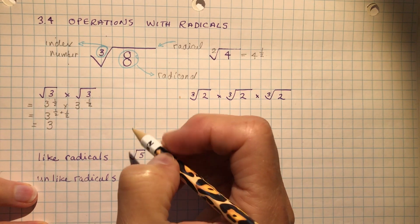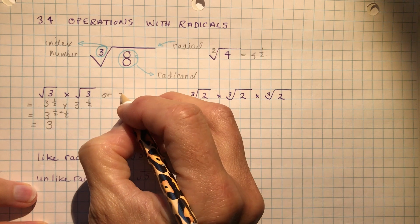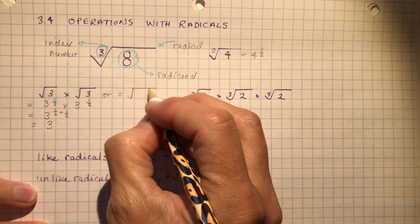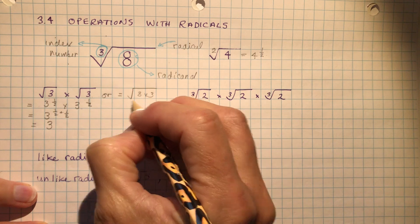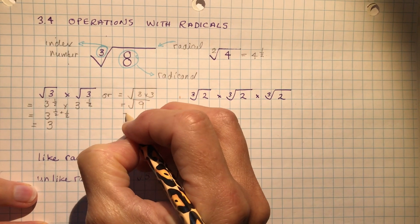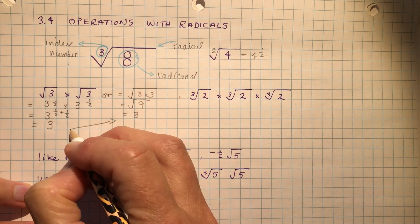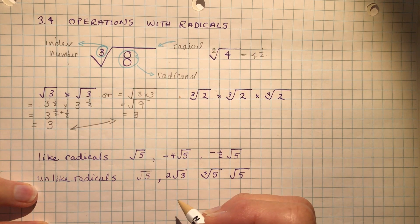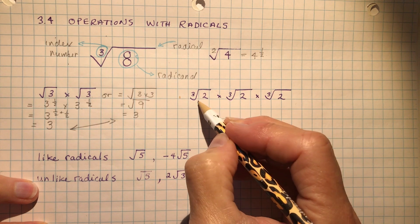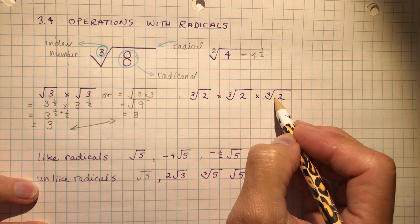Alternatively, you can multiply the numbers under the radical sign together: the square root of three times three is the square root of nine, which is three. Same answer, just a different approach.